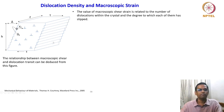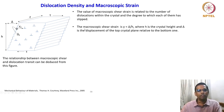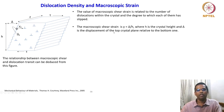The value of macroscopic shear strain is related to the number of dislocations within the crystal and the degree to which each of them has slipped. The total strain stored in the material has something to do with what each individual dislocation experiences inside the crystal. The macroscopic shear strain gamma equals delta divided by h — straightforward: displacement over height — where h is the crystal height and delta is the displacement of the top crystal plane relative to the bottom, because it is a pure shear.